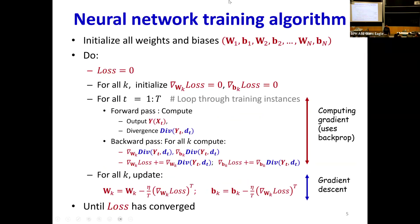This was the overall process. If you were trying to train a network, you would first go through all of the training instances. Each training instance is first passed forward through the net. Then you have a backward pass where you compute the derivative of the divergence for that training instance against all network parameters. You aggregate these derivatives, and then finally you update your network parameters using the derivative of the total loss, which is the aggregate over all training instances.